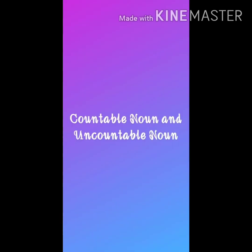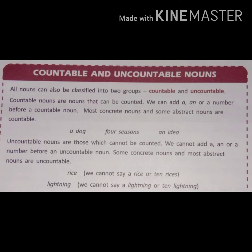We are going to read about countable and uncountable nouns. All nouns can be classified into two groups: countable and uncountable. Countable means things which we can count, and uncountable means things which we cannot count. Countable nouns are the nouns that can be counted — we can add a, an, or a number before a countable noun.